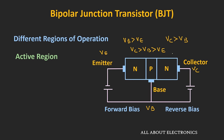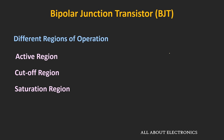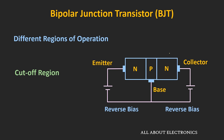Once this condition is satisfied, the BJT will operate in the active region. In the cut-off region, both the base-emitter junction and the base-collector junction are reverse biased. To operate the BJT in this region, the emitter voltage should be greater than base voltage, and at the same time, the collector voltage should also be greater than base voltage.